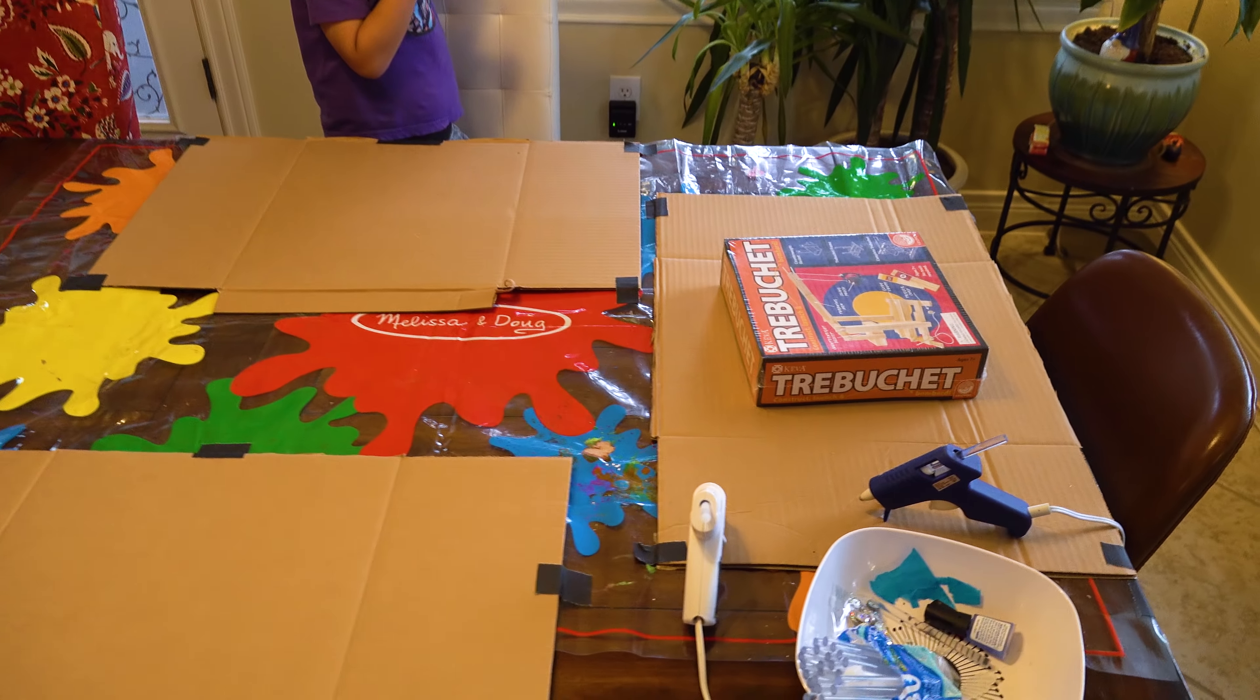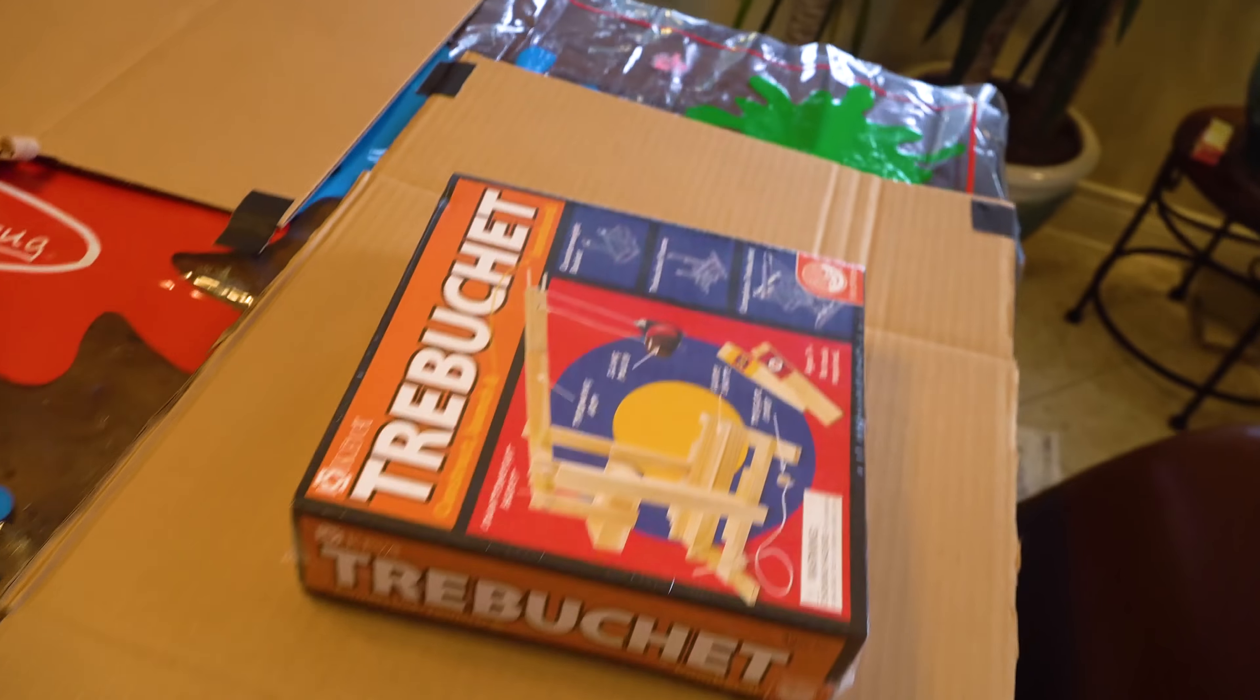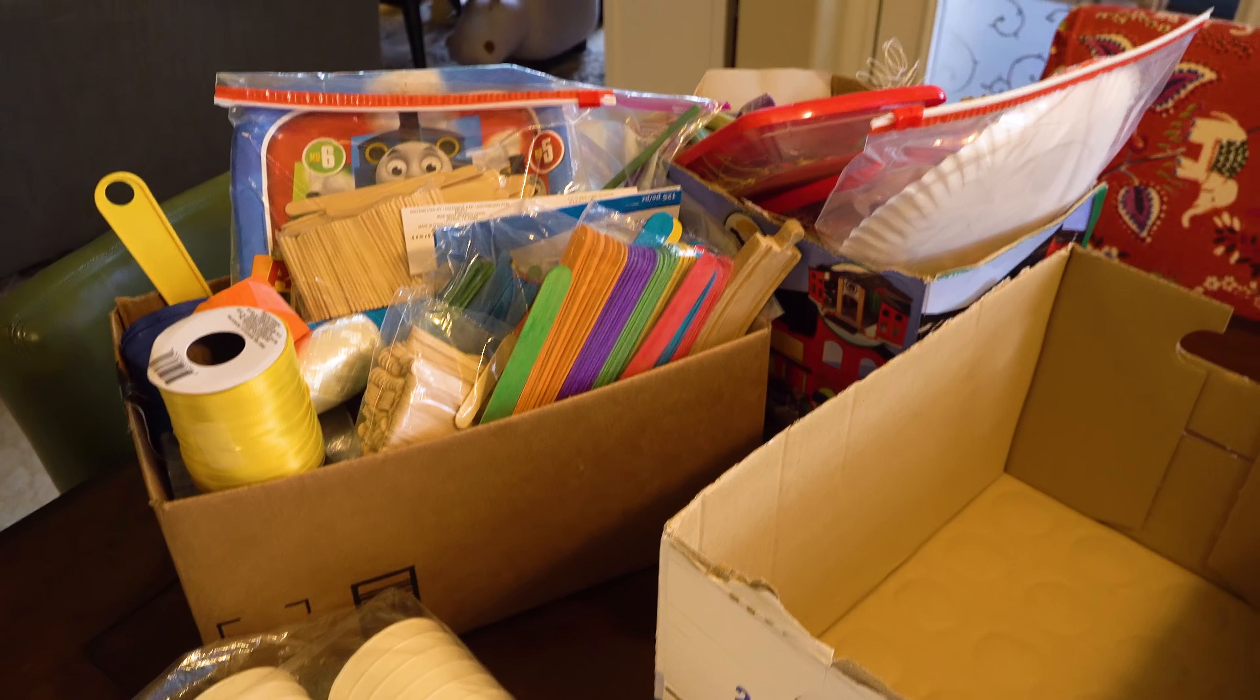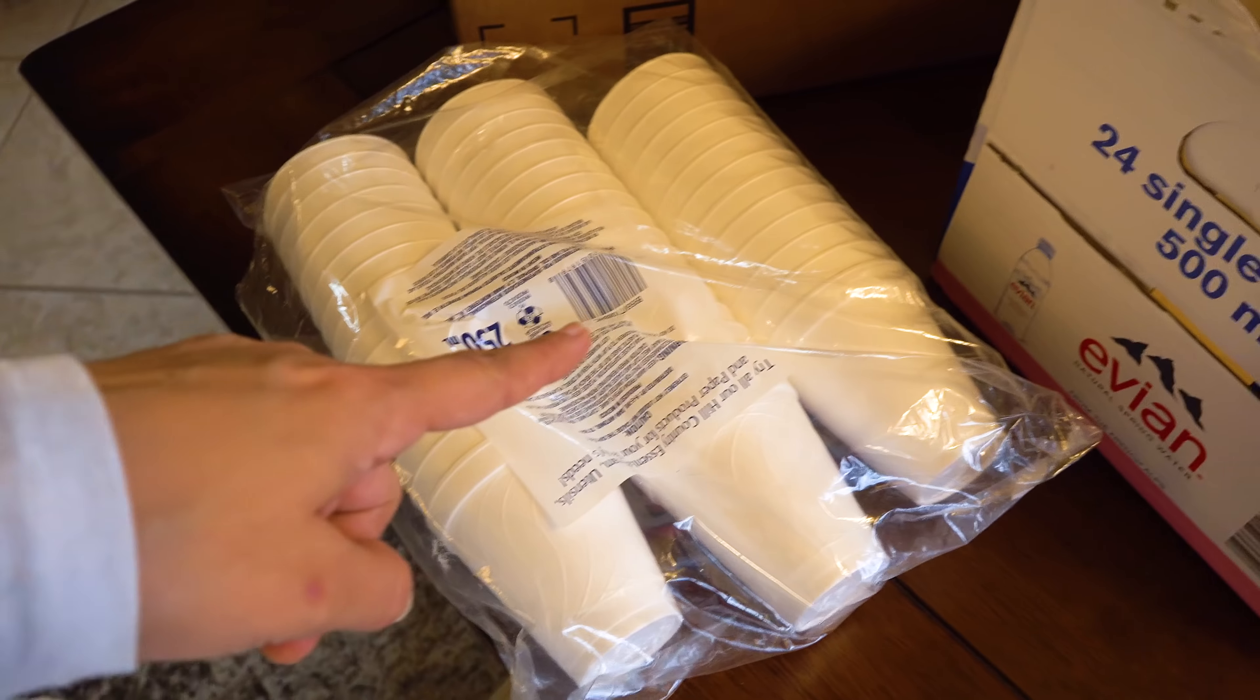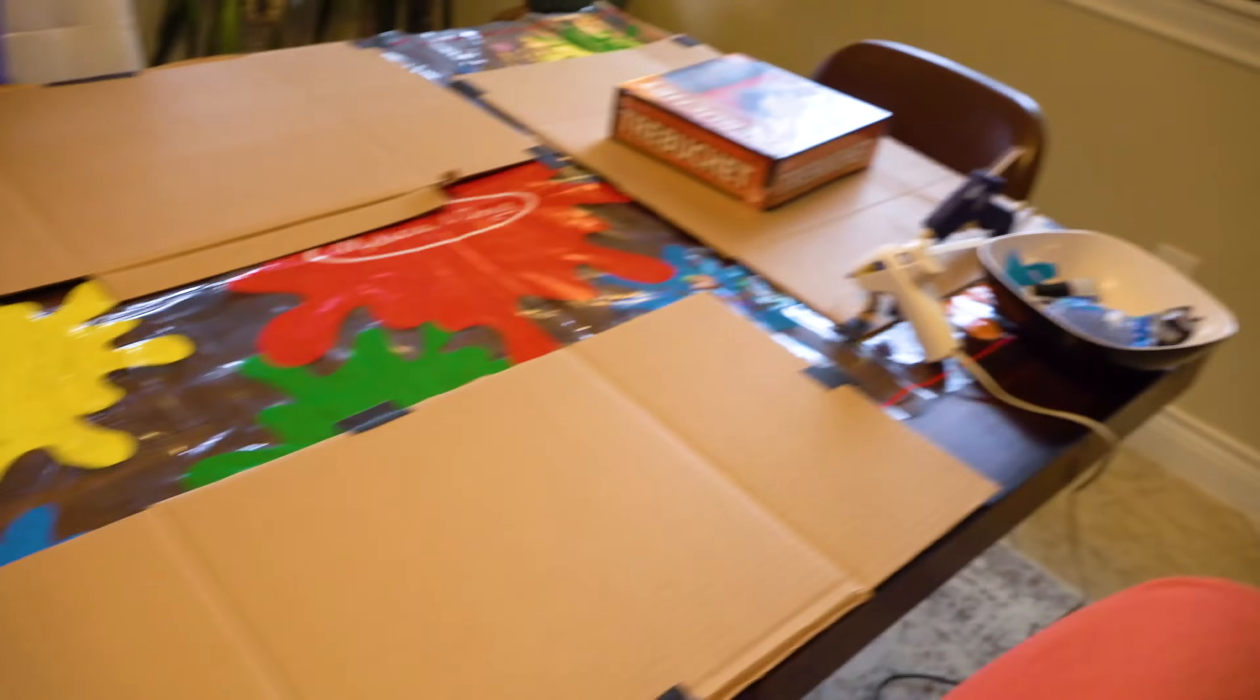We have a clean table and we are ready for crafts. We got the glue guns over here with the adults. We have the trebuchet for Daddy to get started. We have our craft boxes that Mommy's going to organize today using those. Maybe we can paint them and make them look really cool. Yeah? Okay, let's get started, everybody.